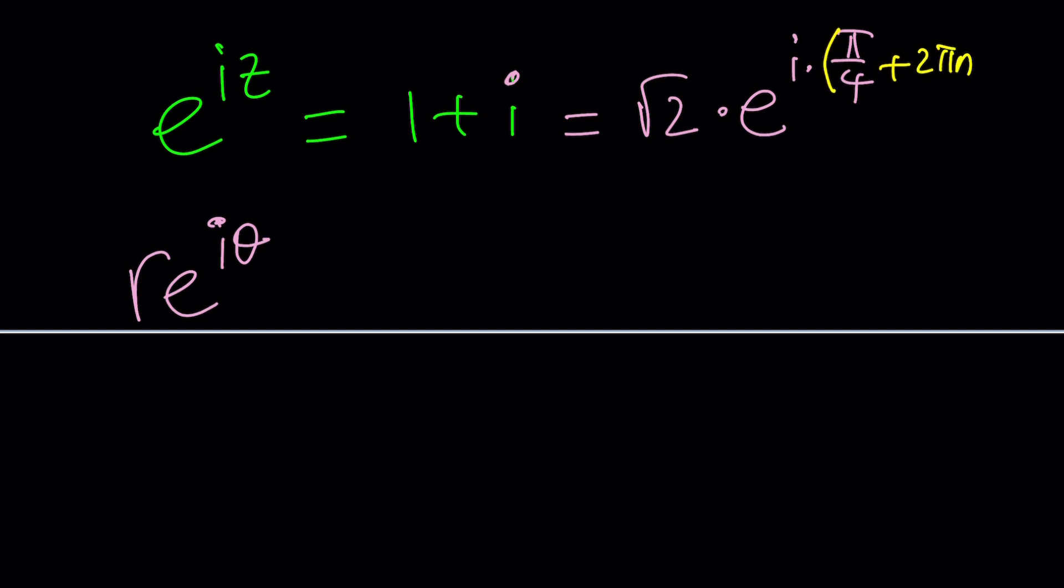Like 2 pi n. Didn't I tell you that this is multi-valued? So this time with the second method, let's just go ahead and use the general approach. In the first method, we found the principal value. But from here, if you log, you get iz equals ln root 2 plus i times,